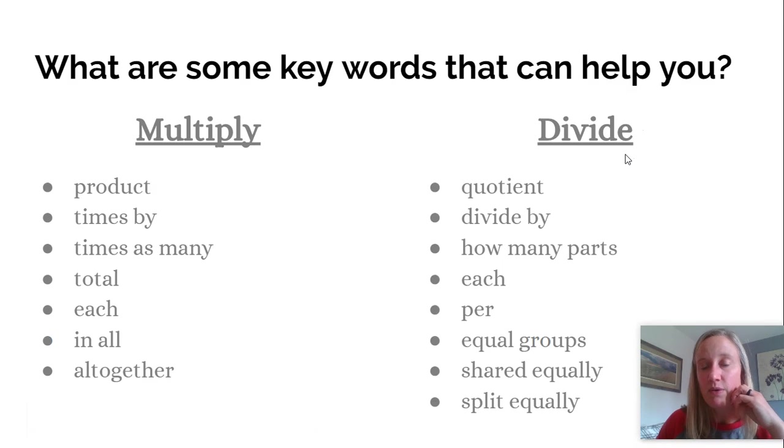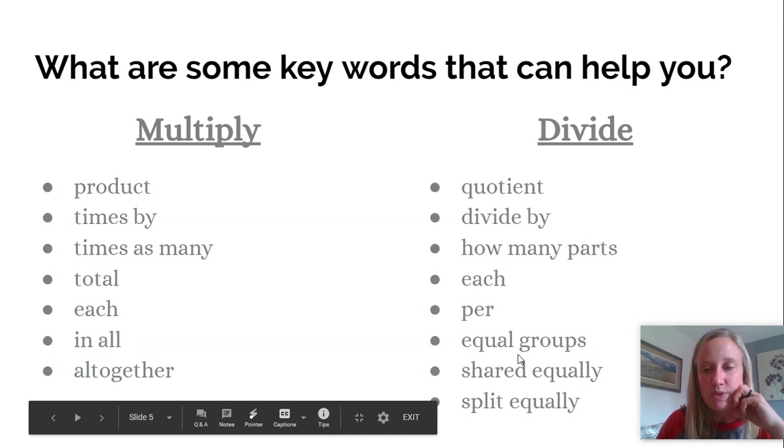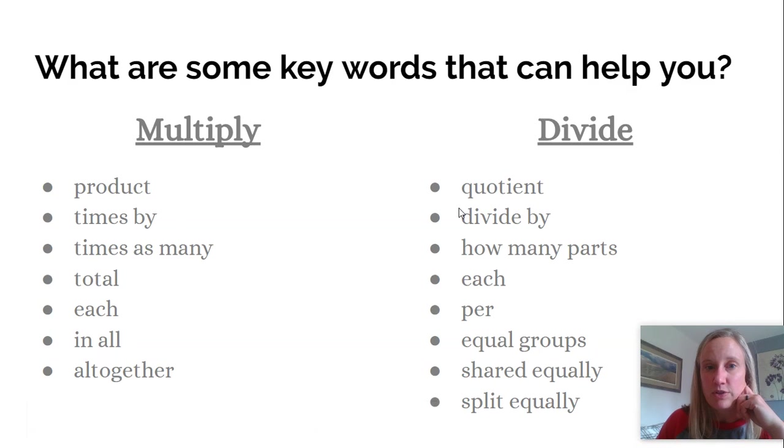What about divide? Well, when you're dividing, you are finding the quotient. So if it says find the quotient, that is a division story. Some other words, divide by. How many parts? Again, each or per. I taught you this in class, if you were in my class. When you see that word each, it almost always is going to tell you it's either multiply or divide, depending on what you're trying to figure out. Per is used a lot in division stories or even in multiplication stories. Equal groups. Shared equally or split equally. These phrases will tell you that you are dividing. So these words might help you decide whether you're going to multiply or divide.